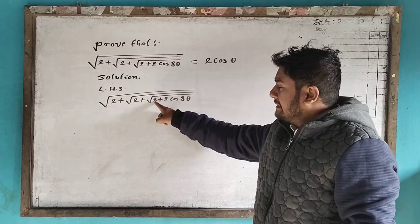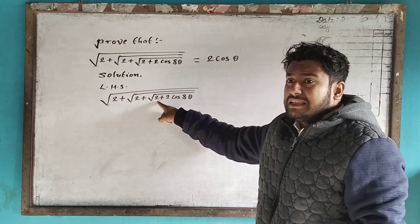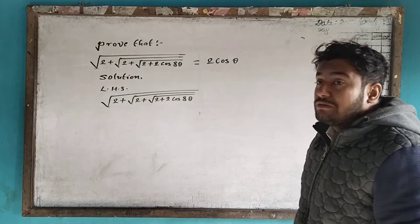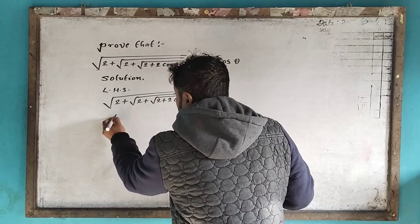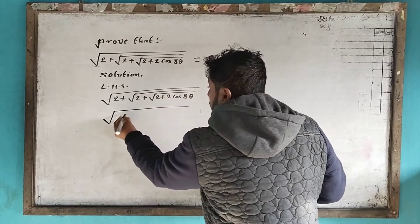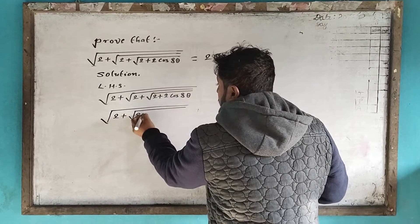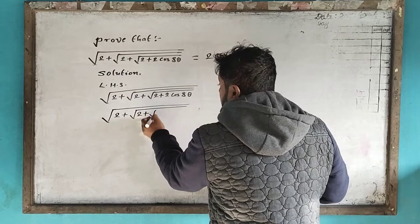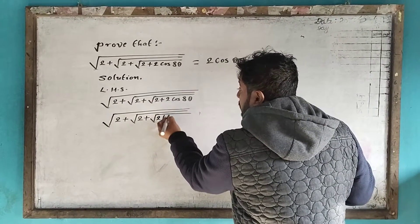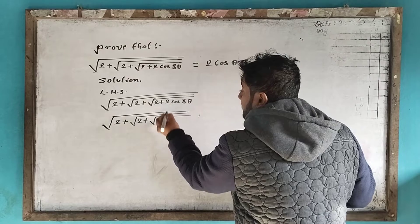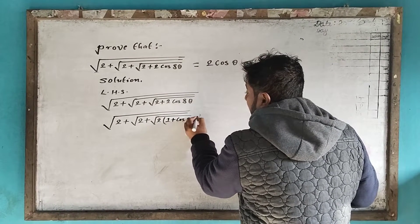This situation is: 2 plus 2 plus 1 plus cos 8 theta.